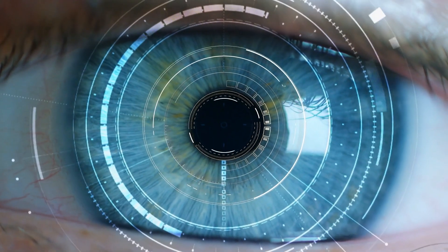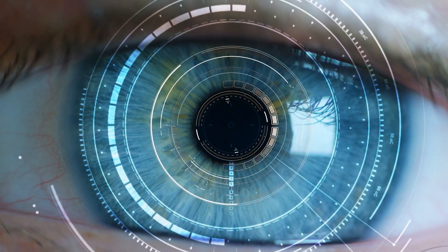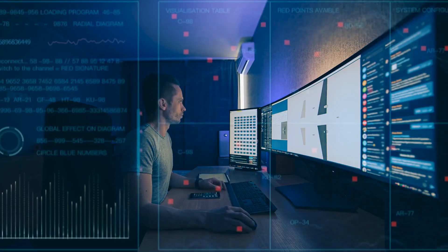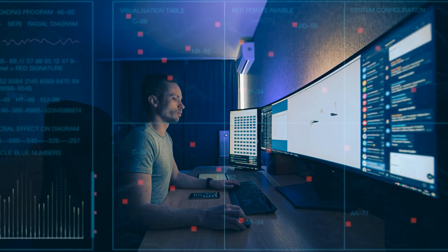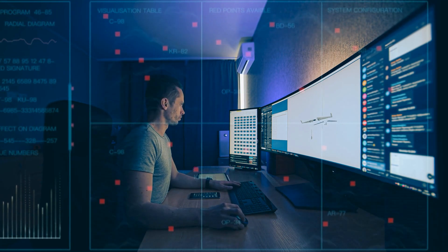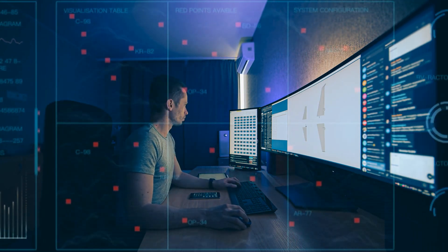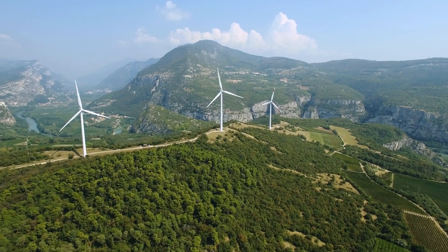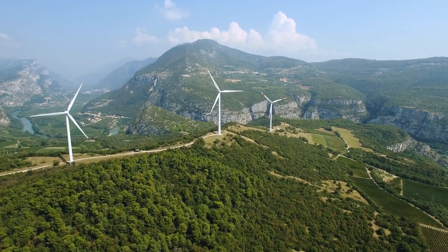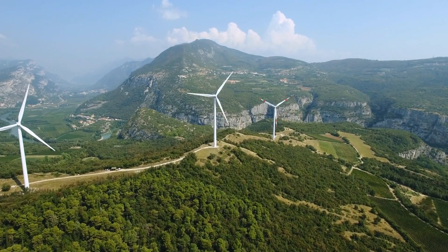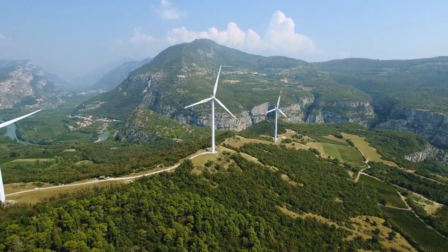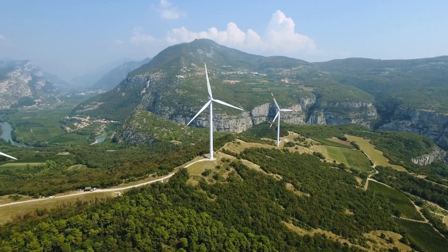Our world is so deeply intertwined with technology that such a massive shift would be disorienting, to say the least. Food and water distribution would likely be a significant initial concern. With no power for refrigeration or to run machinery, our current food distribution system would fall apart. However, we, as a species, have shown ourselves to be remarkably adaptable. Over time, we'd likely see the re-emergence of older technologies and techniques. Picture candlelit homes, horse-drawn carriages, windmills and waterwheels. Communities would need to become more self-sufficient, leading to a resurgence in local farming and other traditional methods of food production and distribution.